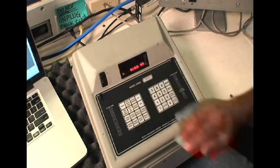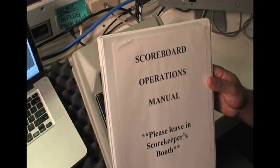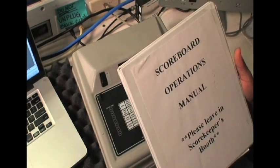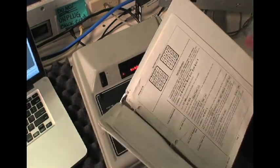So all of these things can be changed. And always right beside this is the scoreboard operations manual. So refer to it if you have any questions when you're sitting in here. And it gives you all the instructions on how to run the clock.